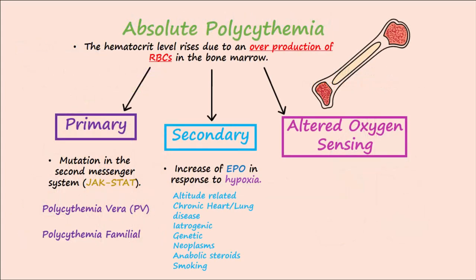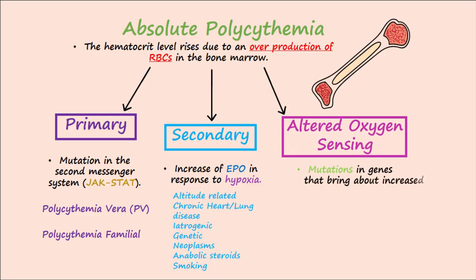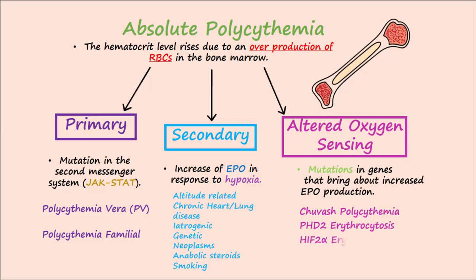The last category of absolute polycythemia is altered oxygen sensing. This type of polycythemia is due to mutations in several different genes that bring about an increase in EPO production. Examples include Chuvash polycythemia, PHD2 erythrocytosis, and HIF2-alpha erythrocytosis.